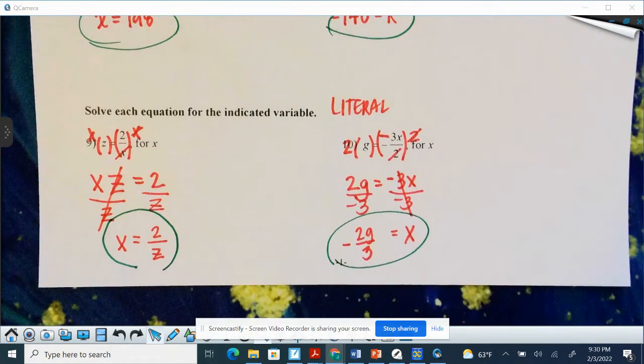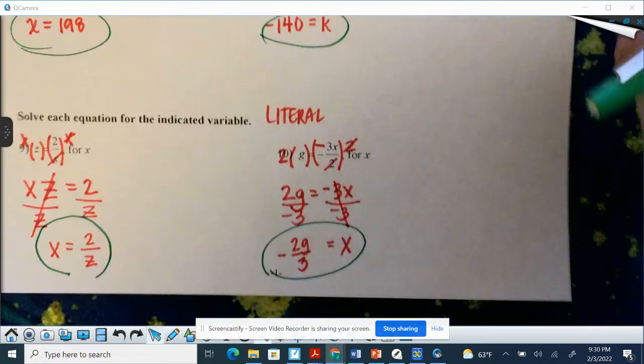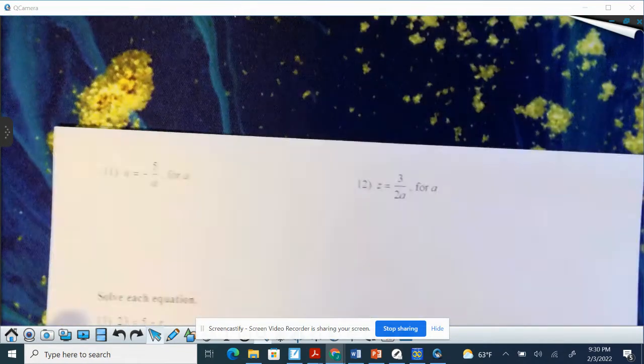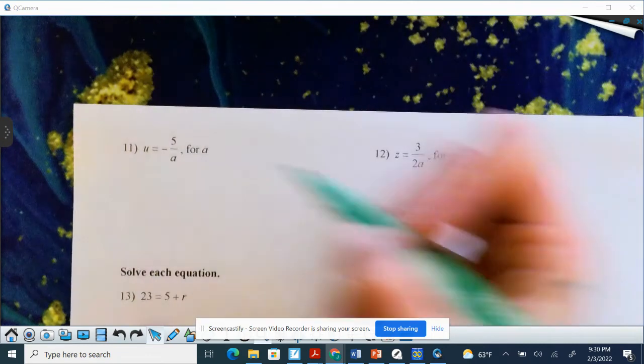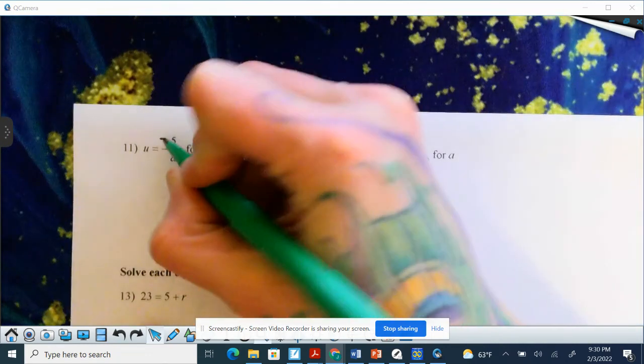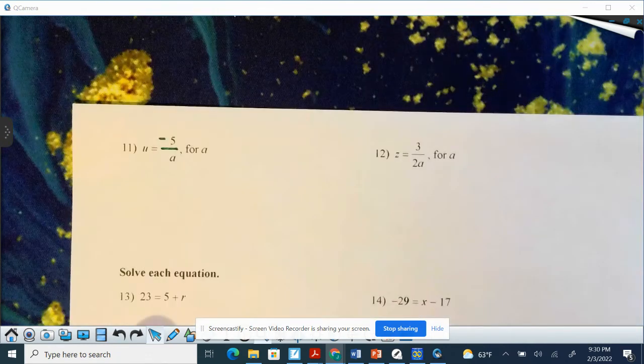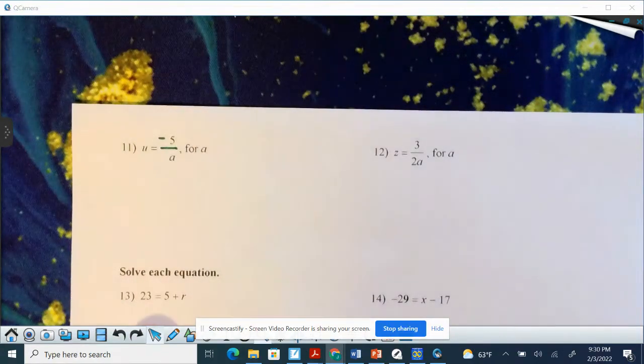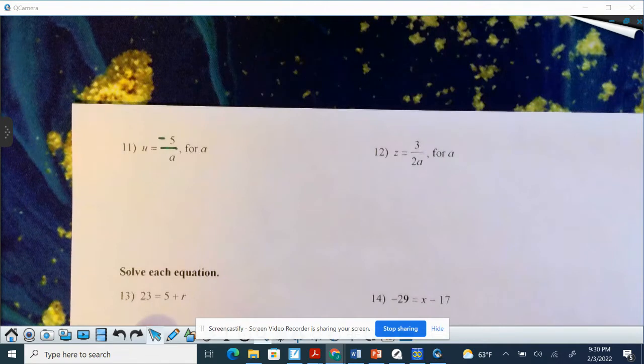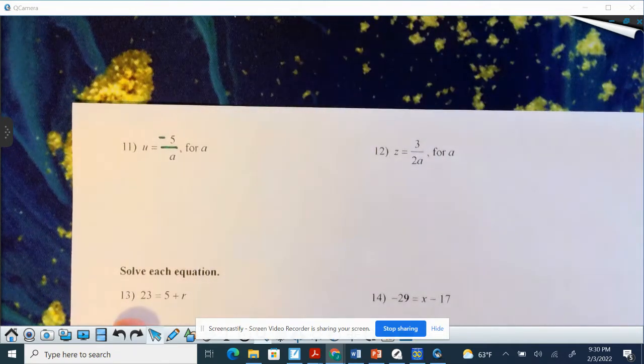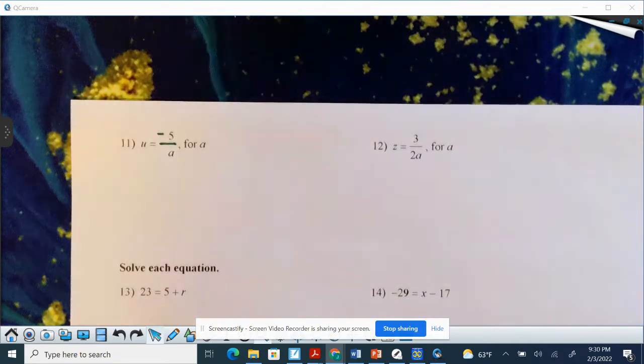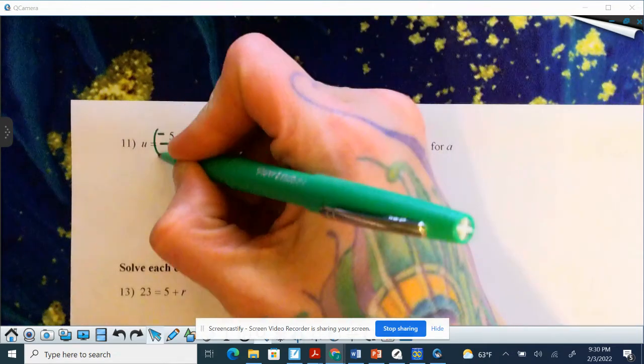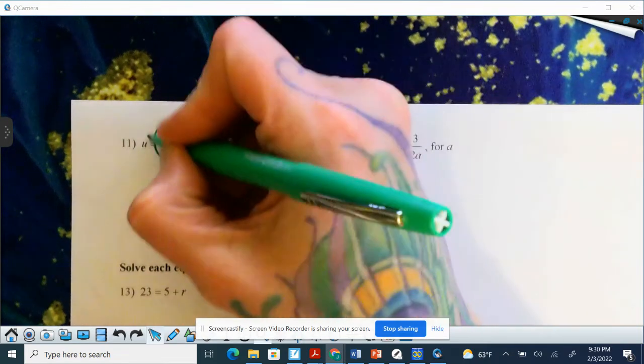All right, I got two more of these. So number 11 and number 12 on your printable. We have a negative. I'm going to attach it to that 5 and then just make this a bar so I can see it. I'm trying to solve for a. Right now a is in the basement or in the denominator. Can't have it there. So it's negative 5 divided by a. The inverse of division is multiplication. Multiply this side by a, this side by a.